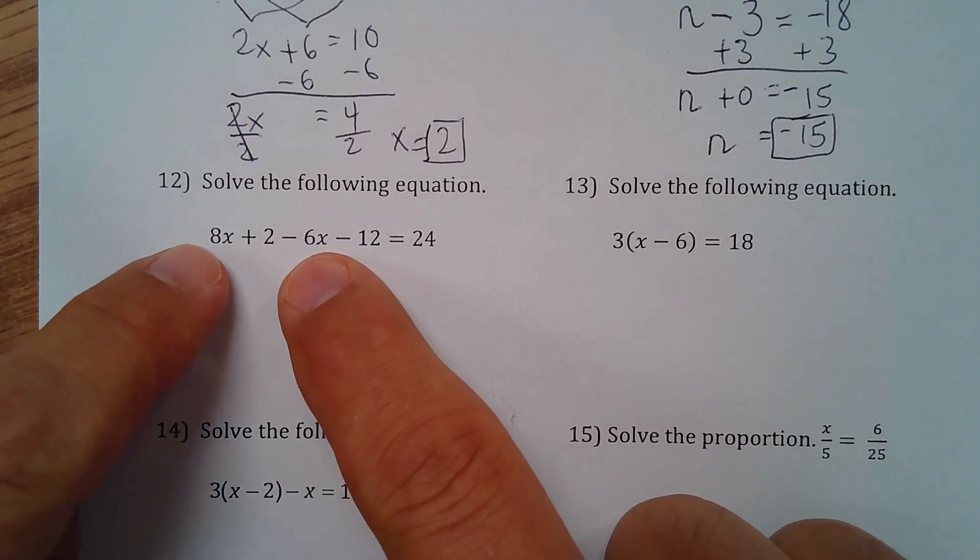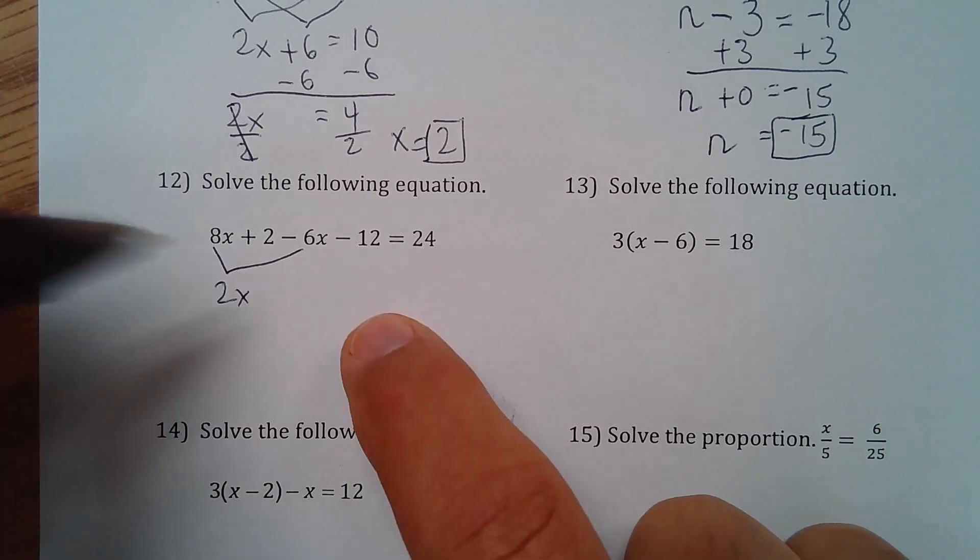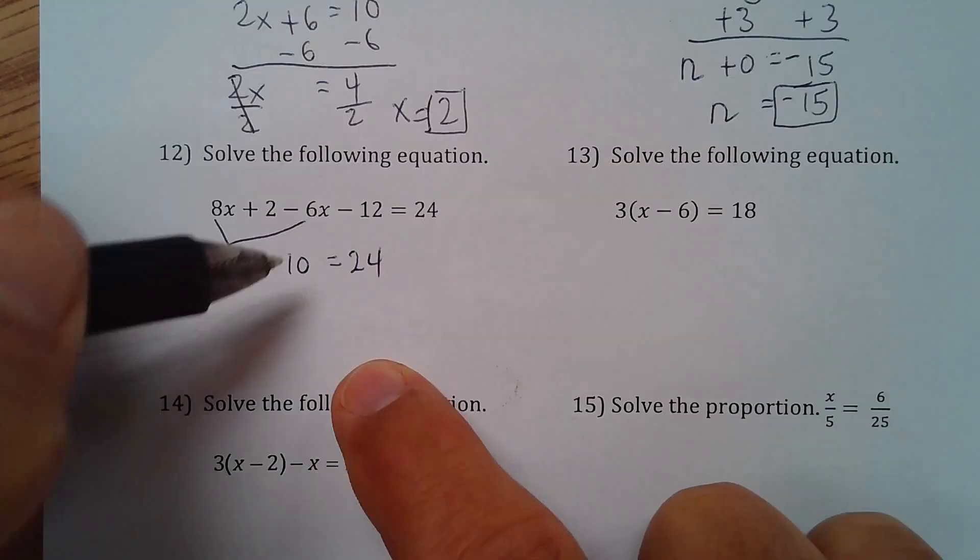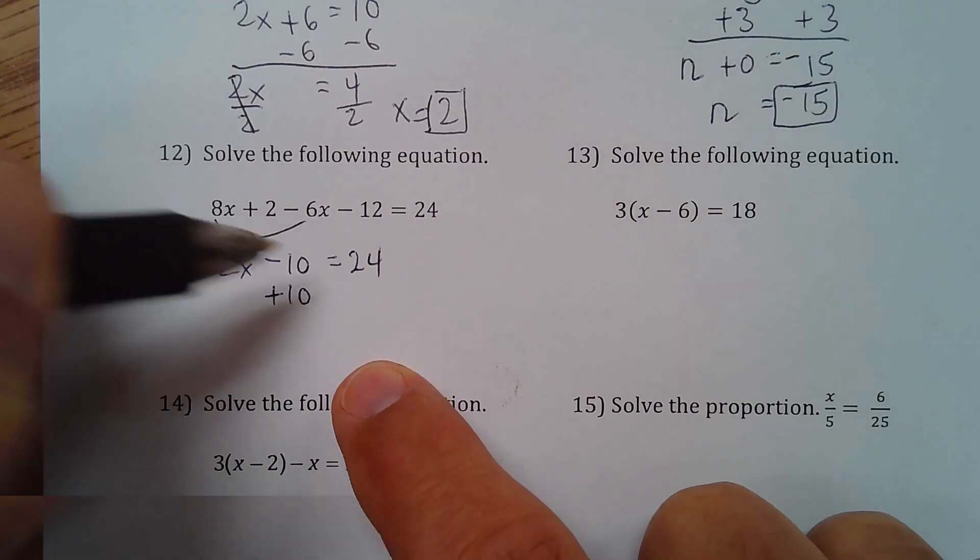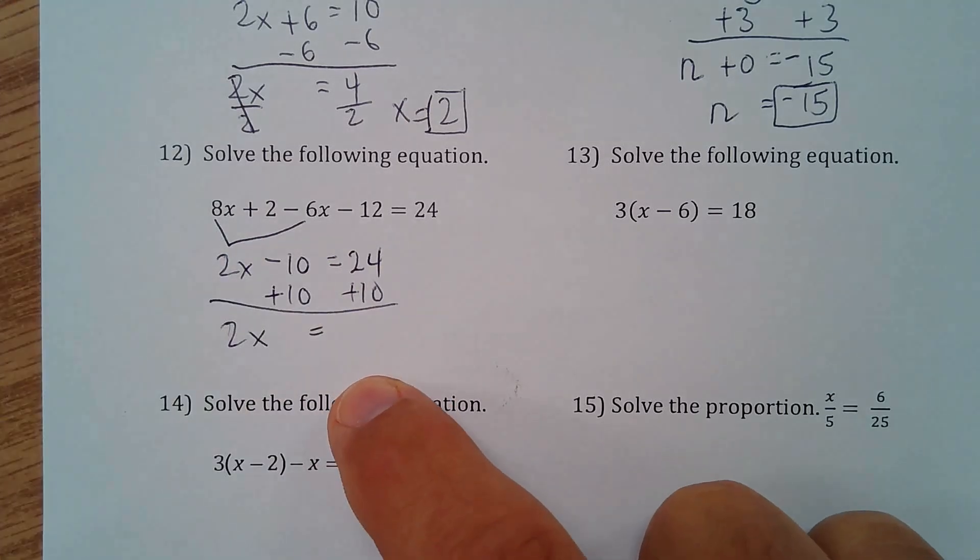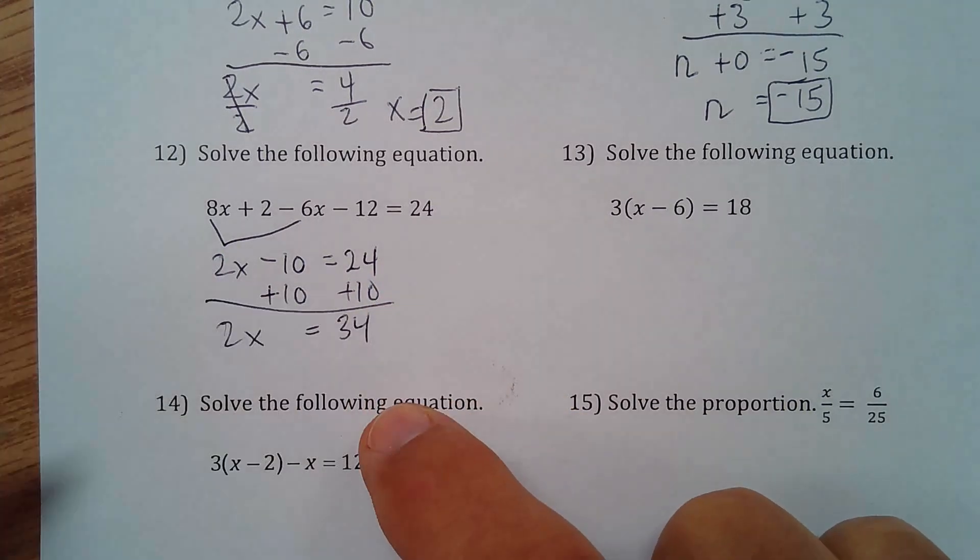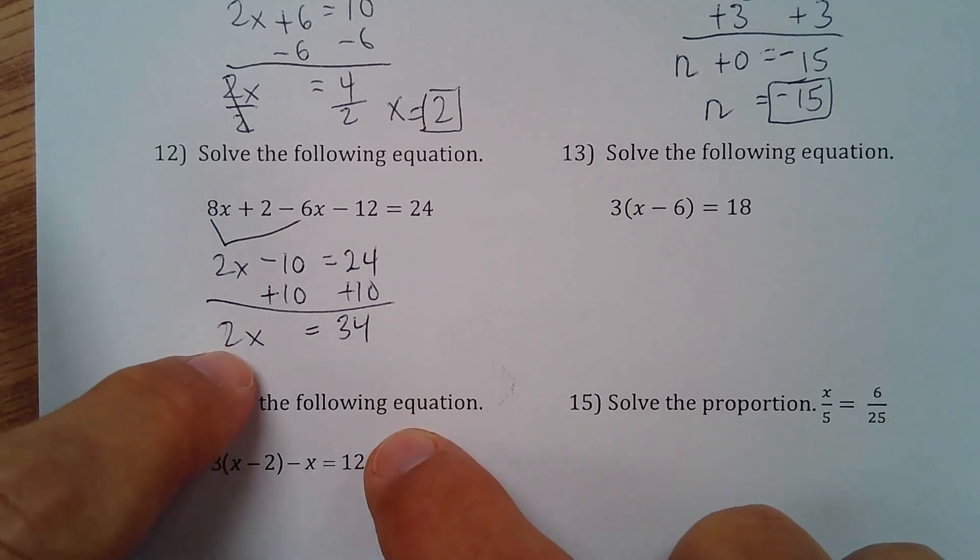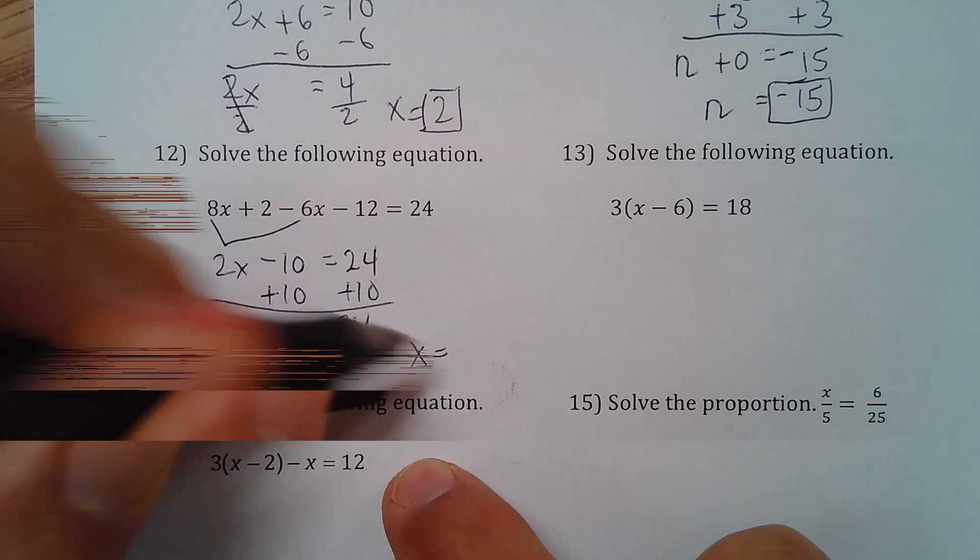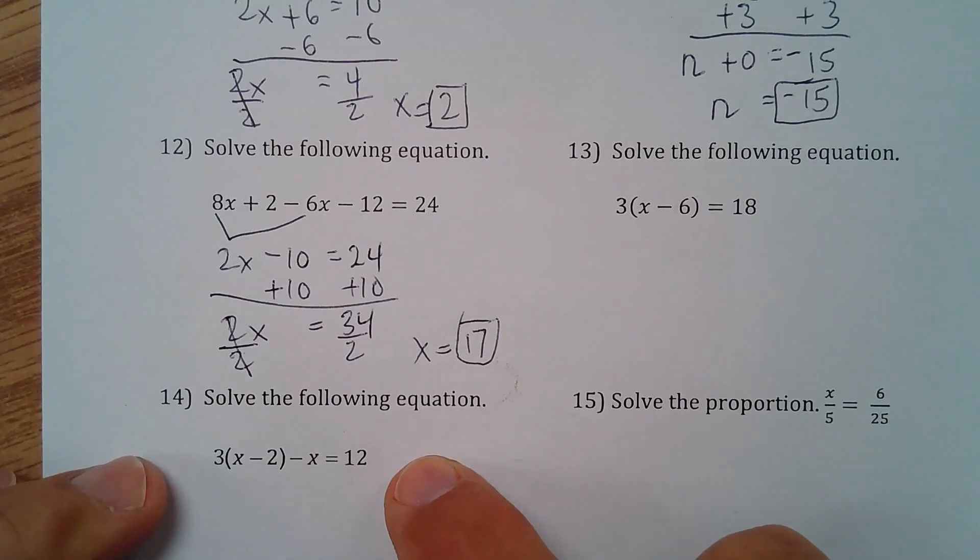So in this equation here, we can combine these like terms. 8x minus 6x is 2x. And then 2 minus 12 is negative 10. Equals 24. Okay. Add 10. Add 10 to both sides. And you have 2x equals 24 plus 10. And that is 34. Finally, since you're multiplying here, you have to divide by 2. And x equals 34 divided by 2 is 17.